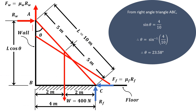If the ladder slips, the upper end moves downward along the wall, so the frictional force F_W acts upward — opposite to the direction of motion. Similarly, the lower end slips outward along the floor, so the frictional force F_F acts towards the left — opposite to the direction of slip. Its magnitude is given by mu_F multiplied by R_F. These are the reasons for the chosen directions of F_F and F_W.